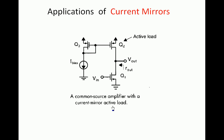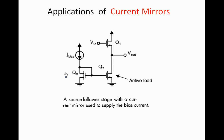Next application: in a common source amplifier, Q1 is the transistor with input at the gate, source grounded, and output taken at the drain. Normally a passive resistor connects from drain to VDD; that resistor is now replaced with a current source mirror. Similarly, in a common drain or source follower amplifier, the drain is common, source is the output terminal, and gate is the input. The passive resistor normally found across the source terminal in this configuration is replaced with a current mirror.